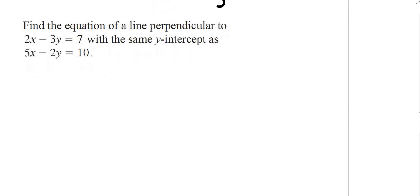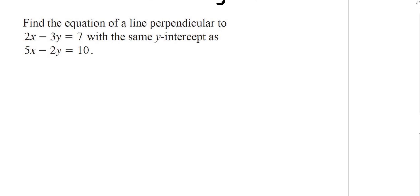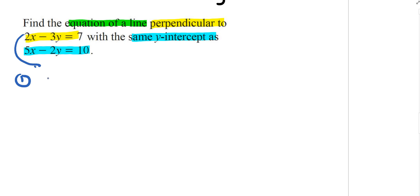Question number 9: I want to find the equation of a line that is perpendicular to one line but has the same y-intercept as another line. Step one is to find the slope. The equation I want is perpendicular to this line, so I need to find what that slope will be.